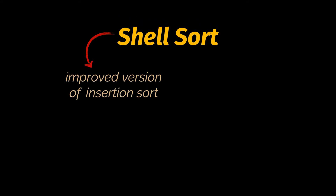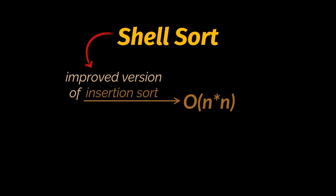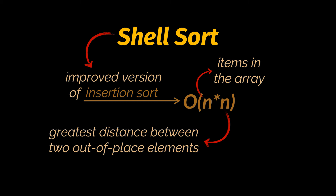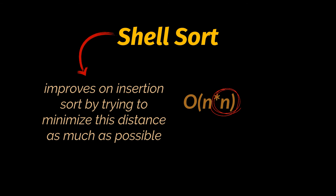If we mention insertion sort, we also have to mention shell sort, as it is an improved version of the insertion algorithm. In insertion sort, elements are moved only one position at a time, leading to O(n²). Breaking this down: O(n²) can be written as O(n × n), where the first n is the number of items in the array, and the second n denotes the greatest distance between two out-of-place elements — in the worst case, the distance between the first and last element.